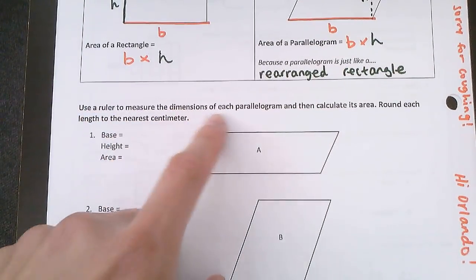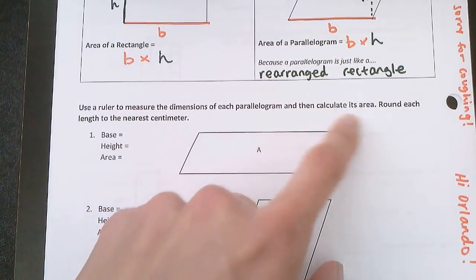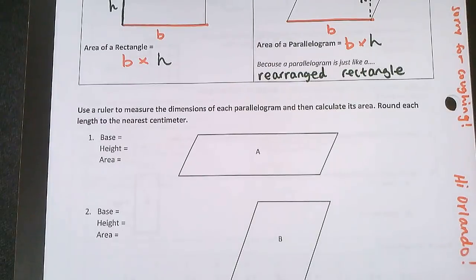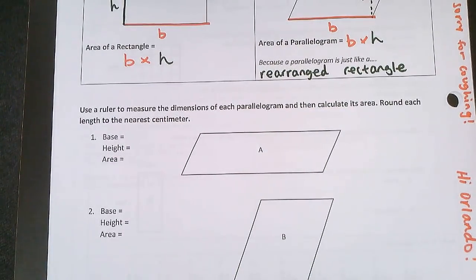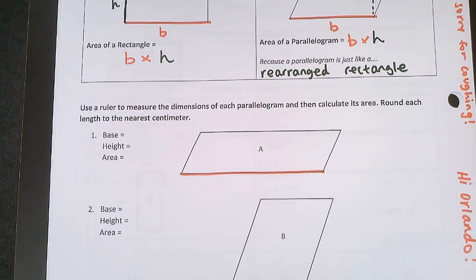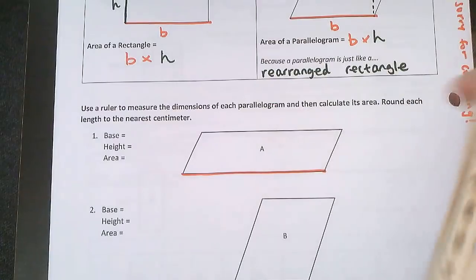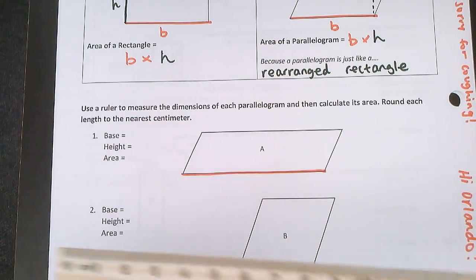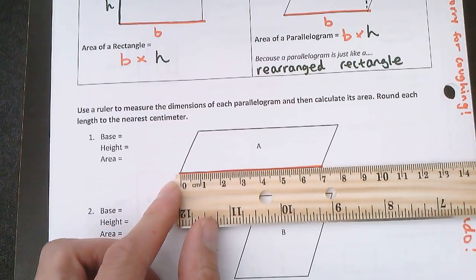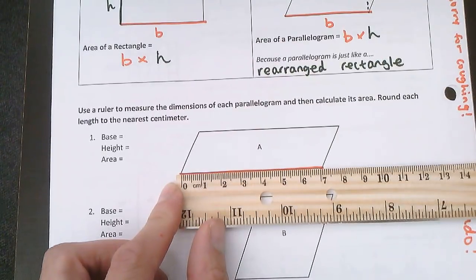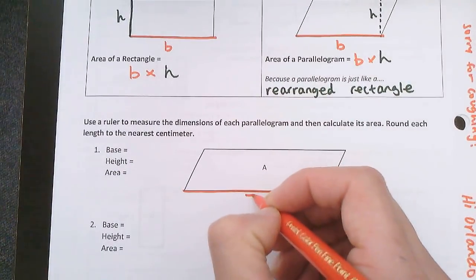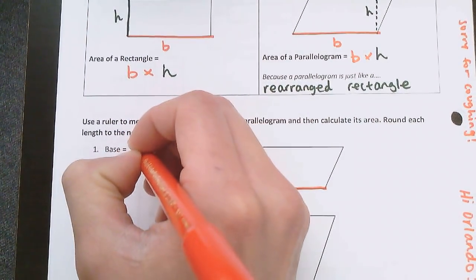Use a ruler to measure the dimensions of each parallelogram and then calculate its area. We're going to round each length to the nearest centimeter. Okay, parallelogram A, the base. That's this part right here. Take out our ruler, centimeter side. Okay. That is close to, but not exactly, seven centimeters. So we're going to round to the nearest centimeter. So my base is seven centimeters.